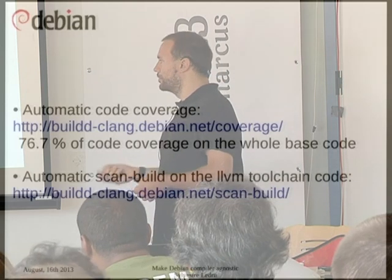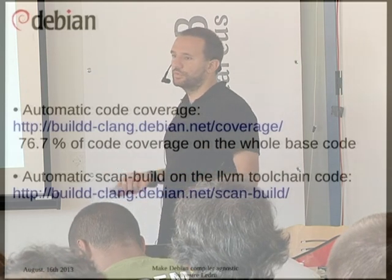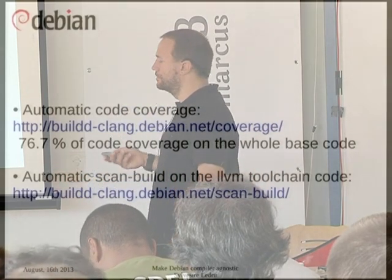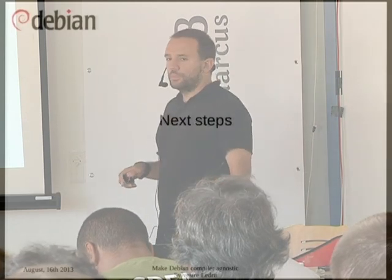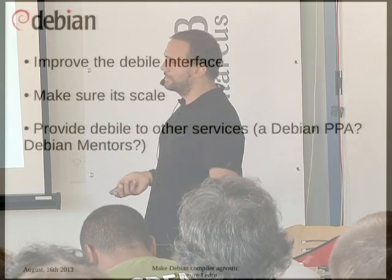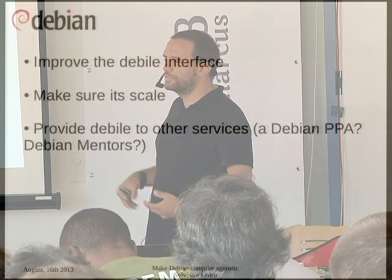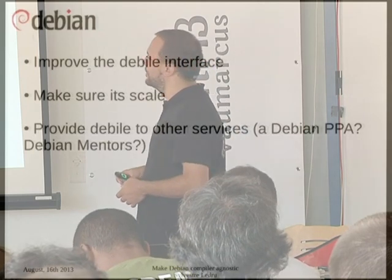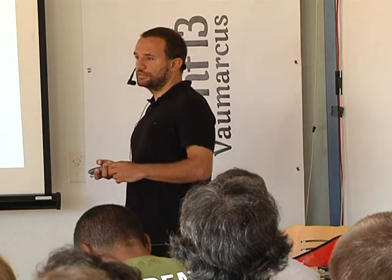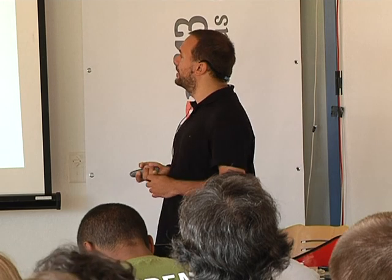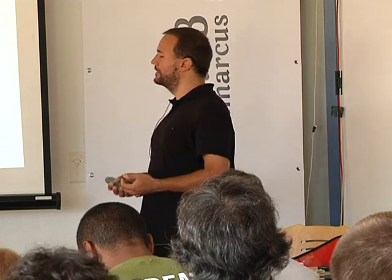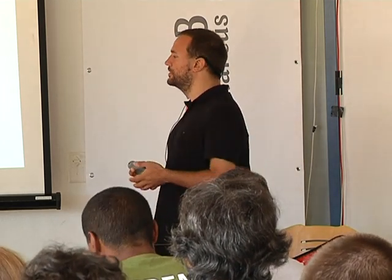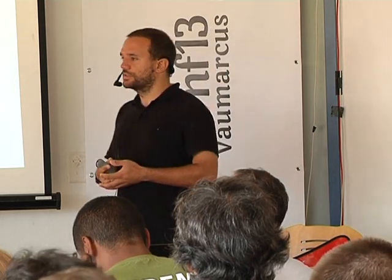We also run the scan-build analyzer on the base code once a day, and it finds something like 300 errors, which is not very significant. What we are going to do next is improve the Debian interface — as I said, it kind of needs work — to make it at least as good as the buildd-pg status web interface. We need to make sure it scales, and we would like to provide this infrastructure, which is unrelated to Clang, to other services. We now have the infrastructure to support a PPA.